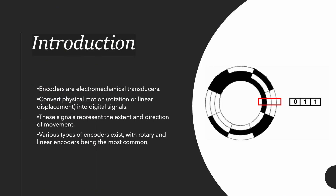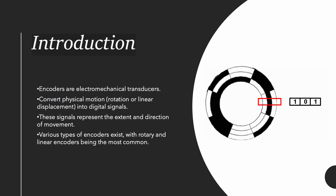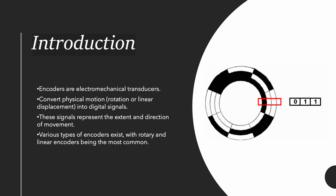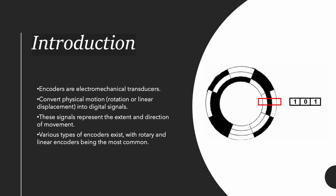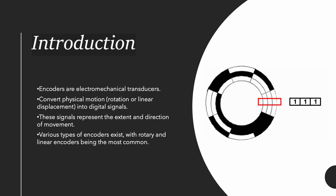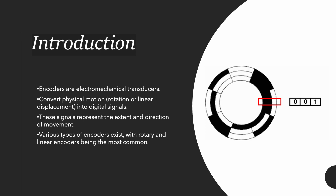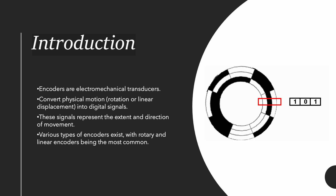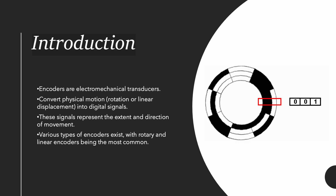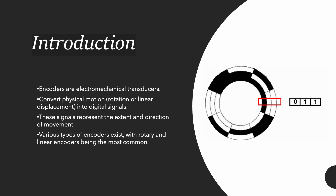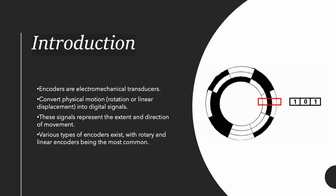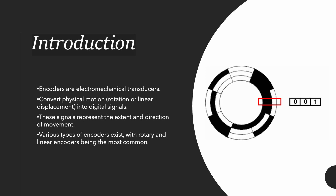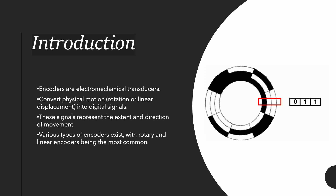Encoders are electromechanical transducers — they convert mechanical energy, linear or rotational motion, into electrical impulses. Using pulses of encoders we can determine position, speed, and direction of motion, as shown in this figure.